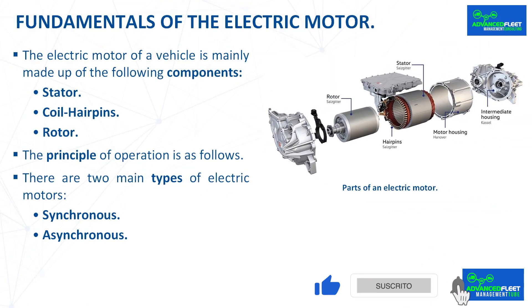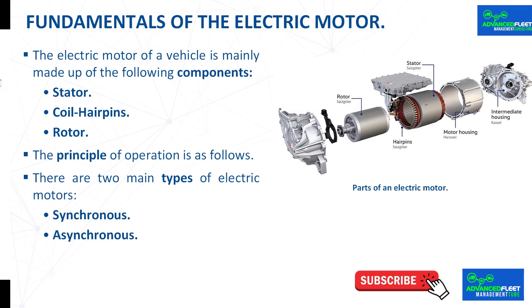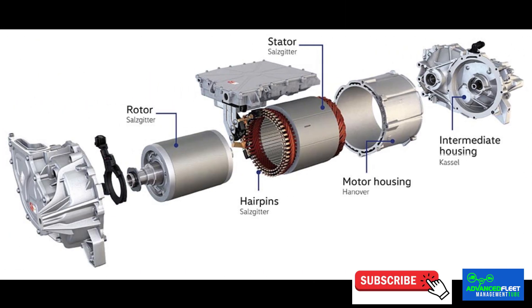Fundamentals of the electric motor. The electric motor of a vehicle is mainly made up of the following components. Stator is the fixed part of the motor, a hollow cylinder containing a coil that creates a rotating magnetic field created by the passage of electric current, constantly shifting its polarity. Coil hairpins are formed by a set of copper wires. Rotor is a cylinder that rotates. It is a magnet creating a fixed magnetic field.